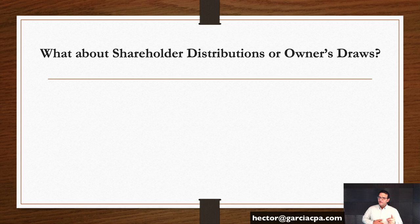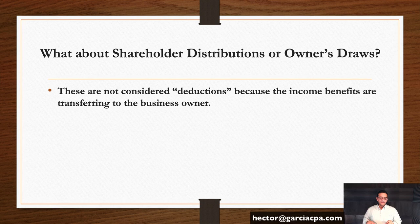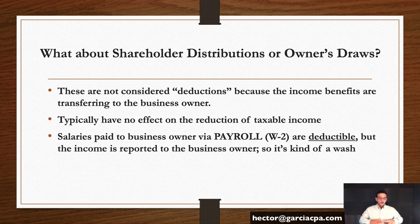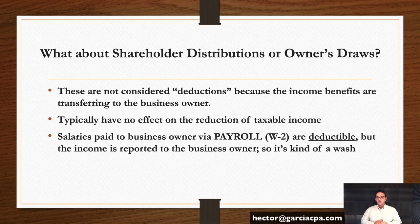Very common question: what about shareholder distributions or owner draws? Customers tell me they took out $1,000 a month to pay themselves — isn't that a deduction? Generally, a draw or distribution is not considered a deduction because the net income is flowing through the owner and that benefit is flowing through the owner. One exception: if the business owner is on payroll and generating a W-2, that expenditure would be deductible through the business but is includable in the W-2 — so at the end it's sort of a wash. Typically, paying yourself as an owner is not part of tax planning.